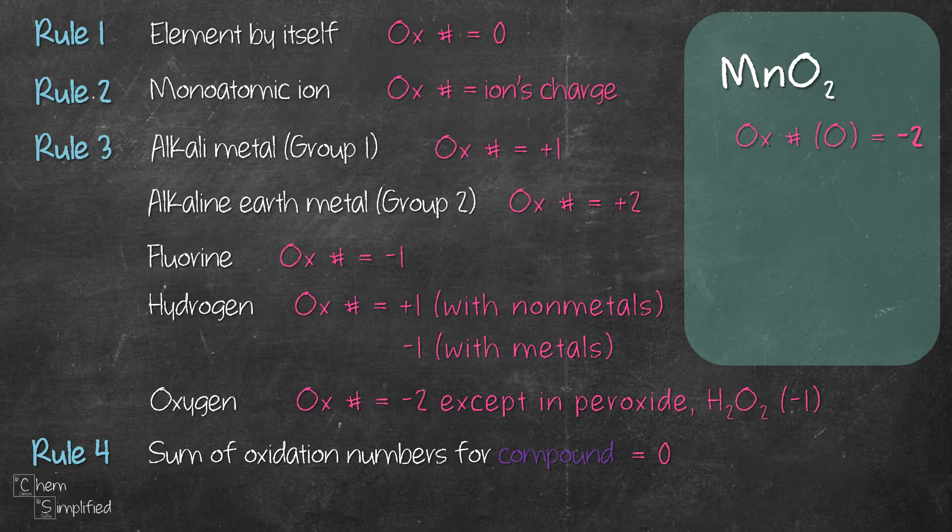Well, since we don't know what is the oxidation number for manganese, we'll just call it x. So, x plus two times negative two equals zero. The reason we times two is because there are two oxygen in MnO2. So we put the two in front and in the bracket we have minus two because that is the oxidation number for oxygen. So x plus two times negative two equals zero because the sum of the oxidation number for a compound MnO2 should be equal to zero.